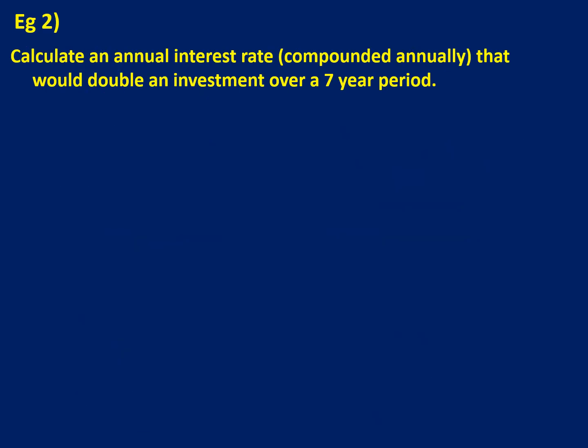Example 2 is a very common question asked in tests and exams. It asks us to calculate an annual interest rate, compounded annually, that would double an investment over a seven-year period. What makes this question slightly tricky is they don't tell us how much is going into the account, so we can choose an amount. You could put in 100 Rand and 200 comes out, or 400 Rand and 800 comes out, or X Rand and 2X comes out. The easiest thing is to put 1 Rand in and have 2 Rand come out. As long as the investment is doubling, you will get the correct answer.